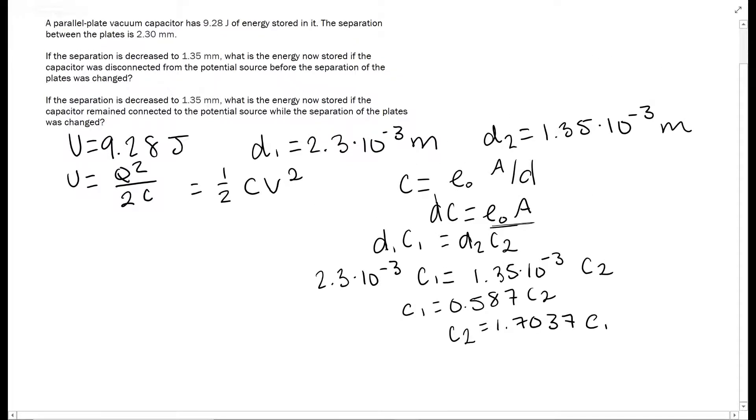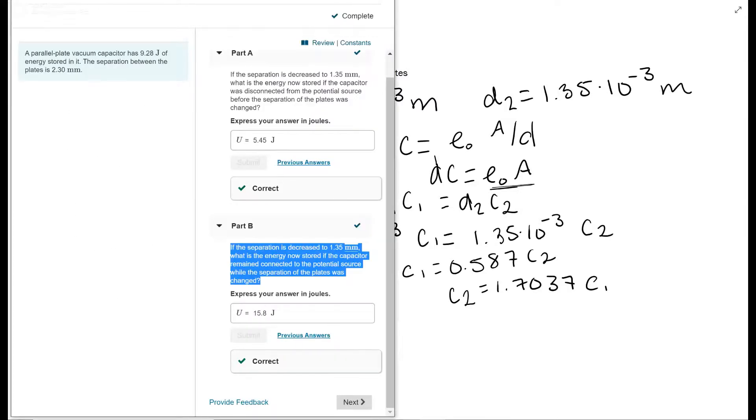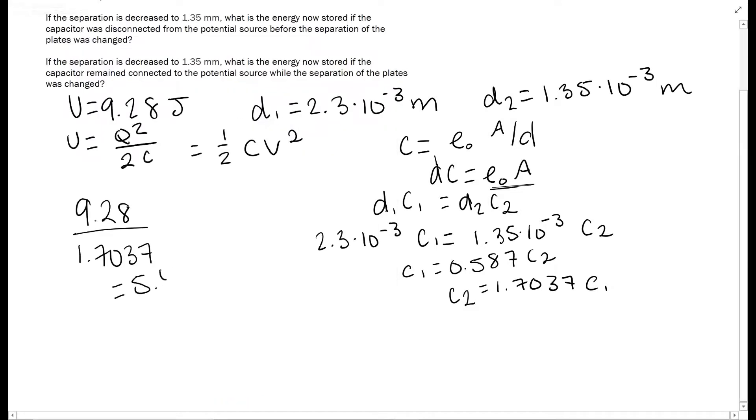So this is our conversion factor. It's not 2, but it's 1.7. Since C is in the bottom, I'm working at this equation right here. U is divided by C, basically. So it's going to decrease by a factor of 1.7. So we're going to take our potential energy and divide this by this 1.7037 C₁. This is going to give you your answer of 5.45 joules for part A.